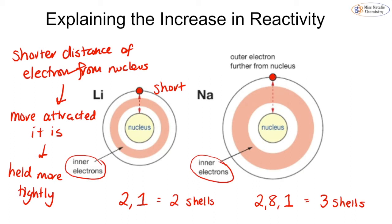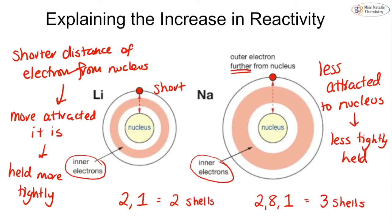When we compare this to sodium, sodium's inner electrons, you can see, are quite wide. And that means that this electron is further away from the nucleus. So because it is further, it is less attracted to the nucleus, which means it is less tightly held. And if it is less tightly held, it means that we can remove it easier.